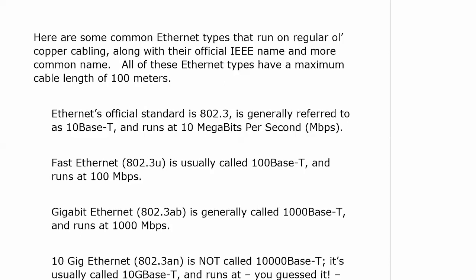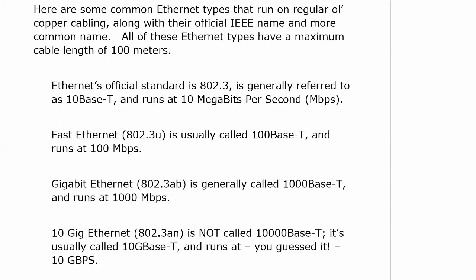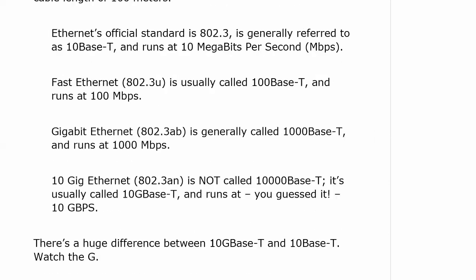Here are some common Ethernet types that run on regular copper cabling. I've given you their official IEEE name and the more common name. All of these Ethernet types have a maximum cable length of 100 meters. It's a good idea to know these standards by number: Ethernet standard 802.3 is called 10Base-T and runs at 10 megabits per second. Fast Ethernet, 802.3U, is referred to as 100Base-T and runs at 100 meg. Gigabit Ethernet, 802.3AB, is called 1000Base-T and runs at 1000 meg. 10 Gig Ethernet, 802.3AN, is called 10GBase-T and runs at 10 gig.